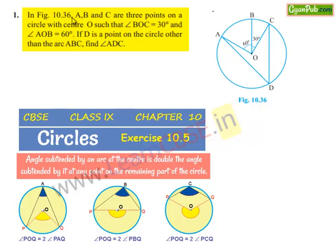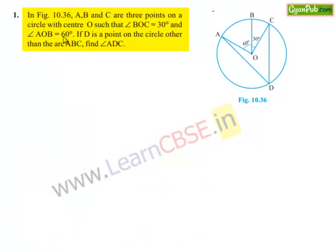Coming to the first question. In figure 10.36, A, B and C are three points on the circle with center O such that angle BOC is equal to 30 degrees and angle AOB is equal to 60 degrees. If D is a point on the circle other than the arc ABC, find angle ADC.